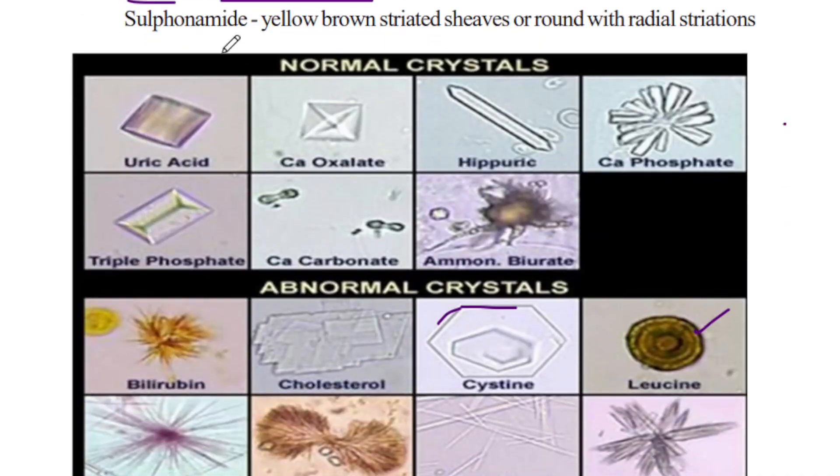Sulfonamide crystals appear yellow-brown as striated sheaves or round with radial striations, and are considered abnormal urinary crystals.